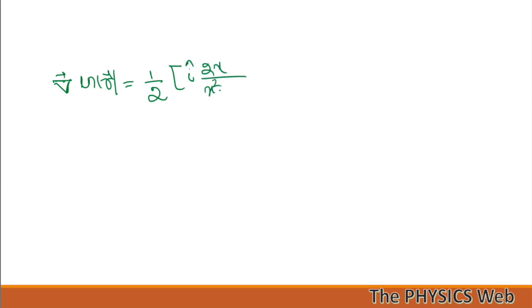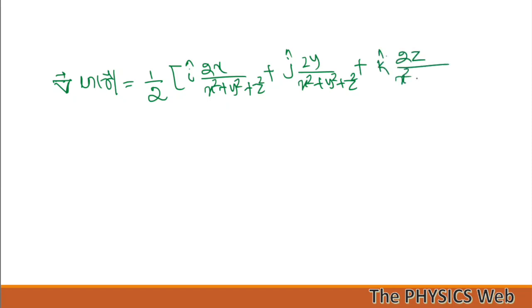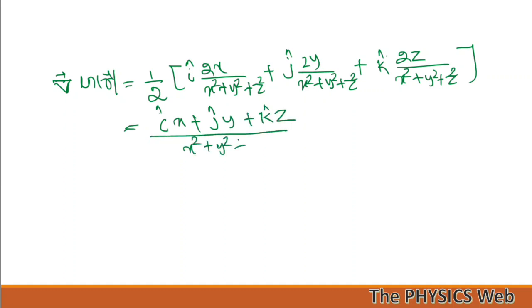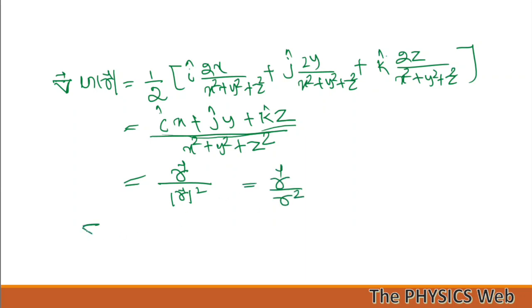So gradient of ln r = (1/2)[i-cap·(2x/(x²+y²+z²)) + j-cap·(2y/(x²+y²+z²)) + k-cap·(2z/(x²+y²+z²))]. The factor of 2 cancels with the 1/2, giving [x·i-cap + y·j-cap + z·k-cap] / (x²+y²+z²). The numerator is the position vector r-vector, and the denominator is r², so gradient of ln r = r-vector / r².